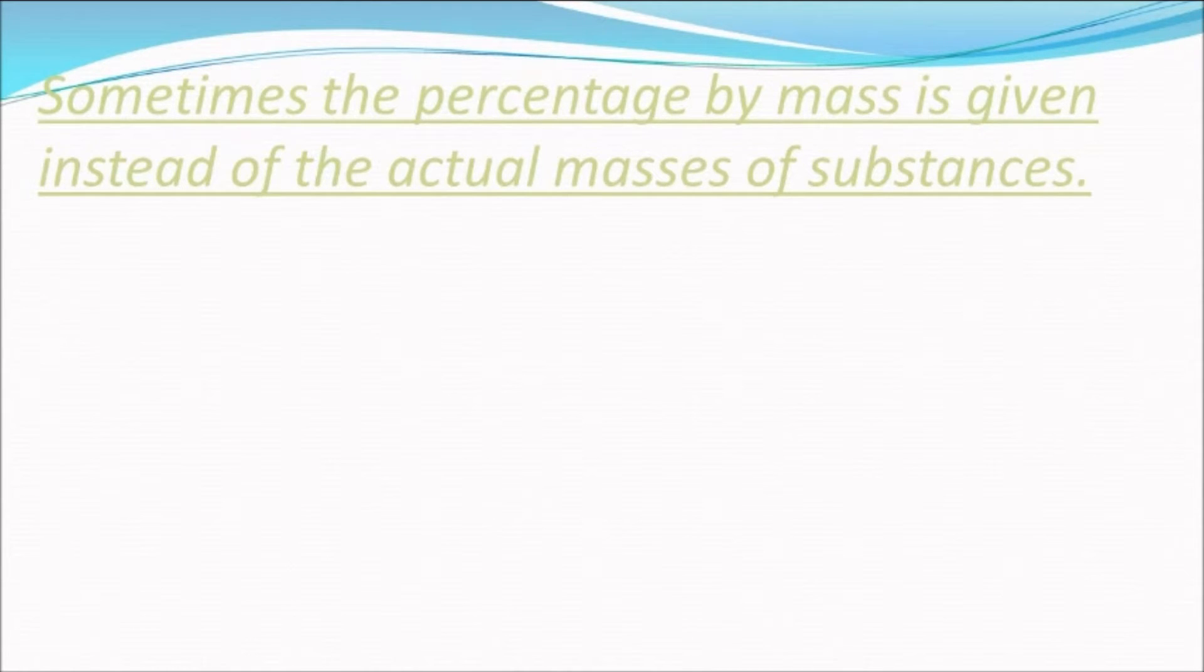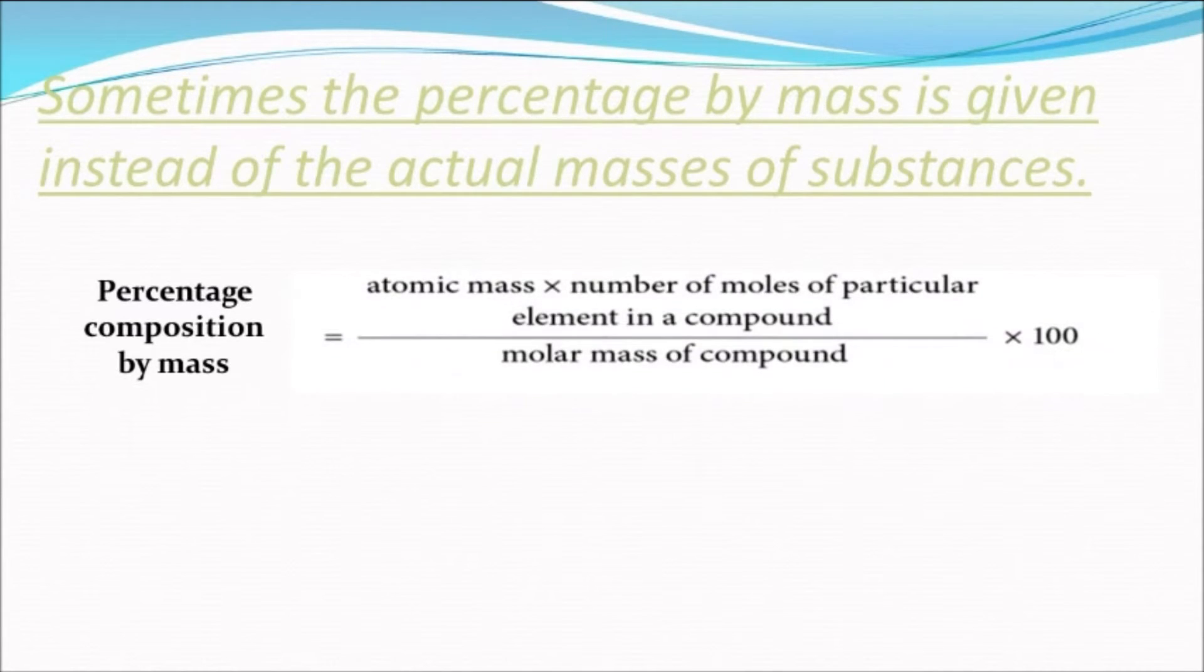The percentage by mass equals the atomic mass multiplied by the number of moles of particular element in a compound, divided by the molar mass of that compound, multiplied by 100.